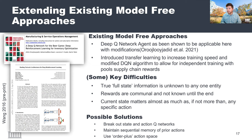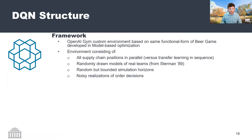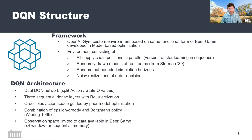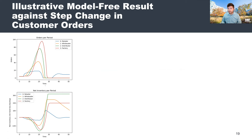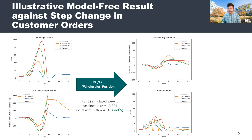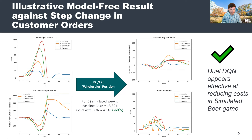The actual DQN I built is based on a flexible gym environment in which I could build out random assemblages of teams over random time horizons, and additionally over possibly noisy realizations of order decisions. The DQN itself is a dual system that uses state as a combination of just the information any one entity within the beer game actually has access to, repeated over a history of four previous observations — which maps to the amount of time a signal sent by an entity is transmitted upstream and comes back around again. In terms of actual results, at the wholesaler position, costs were reduced by about 69%. So this dual DQN is learning a mechanism by which it can reduce costs within this space.